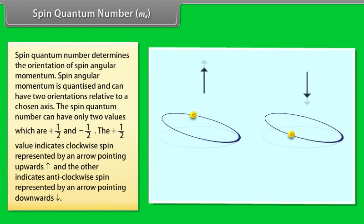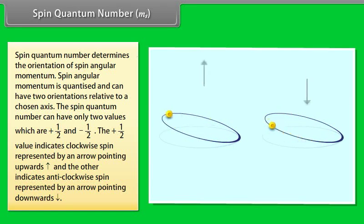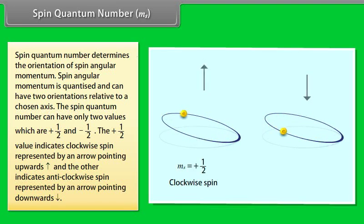Spin Quantum Number MS determines the orientation of spin angular momentum. Spin angular momentum is quantized and can have two orientations relative to a chosen axis. The spin quantum number can have only two values: +½ and −½. The +½ value indicates clockwise spin represented by an arrow pointing upwards, and −½ indicates anticlockwise spin represented by an arrow pointing downwards.